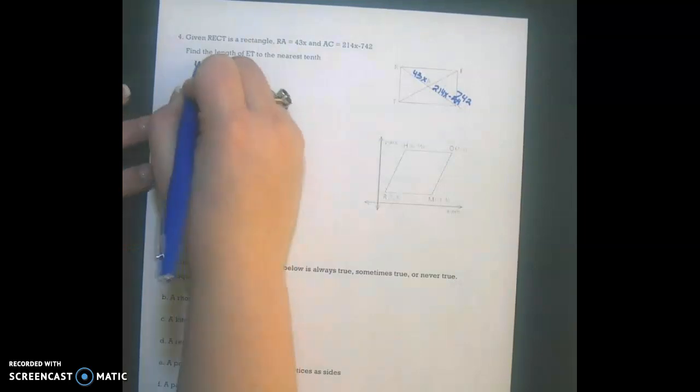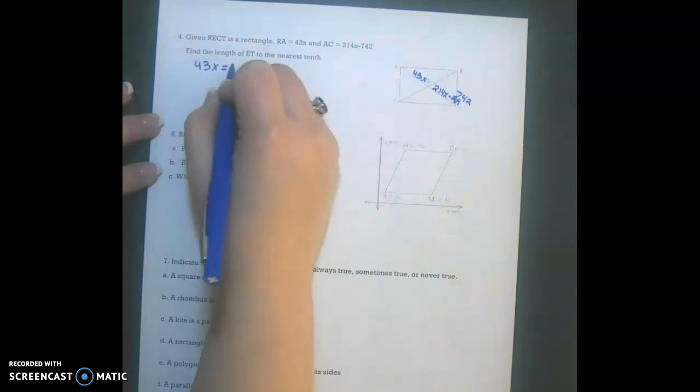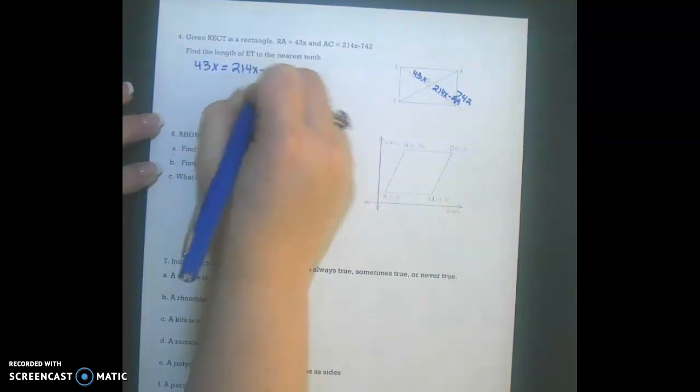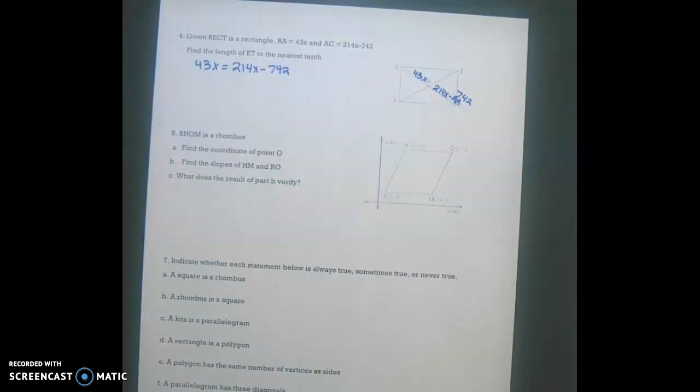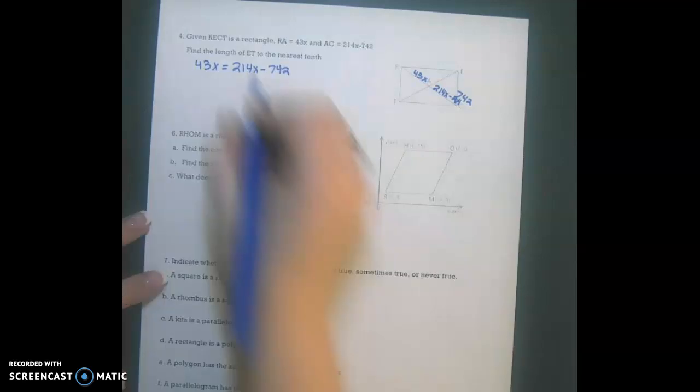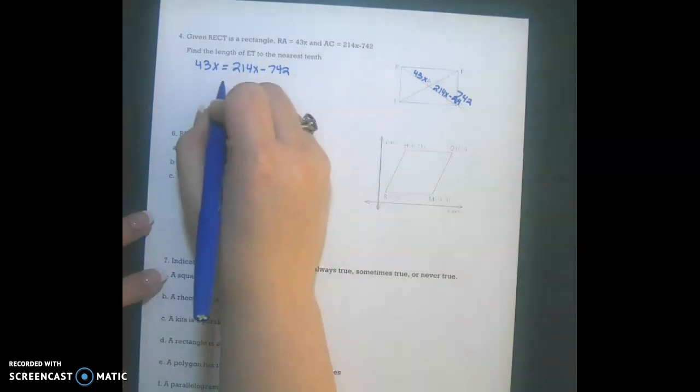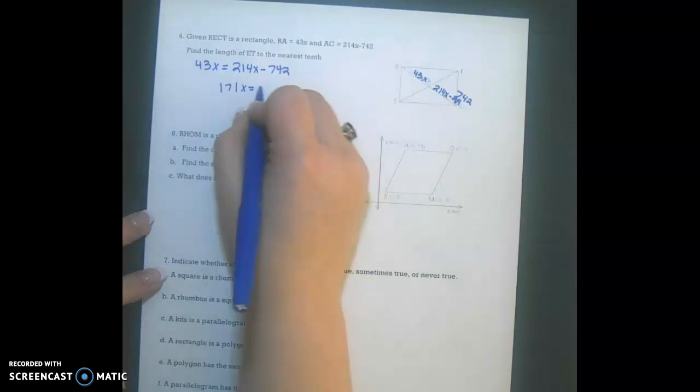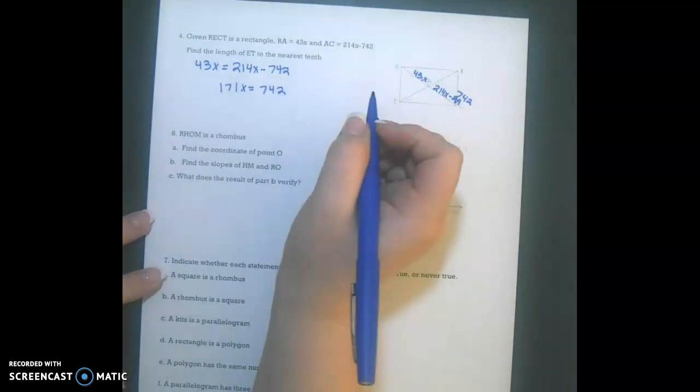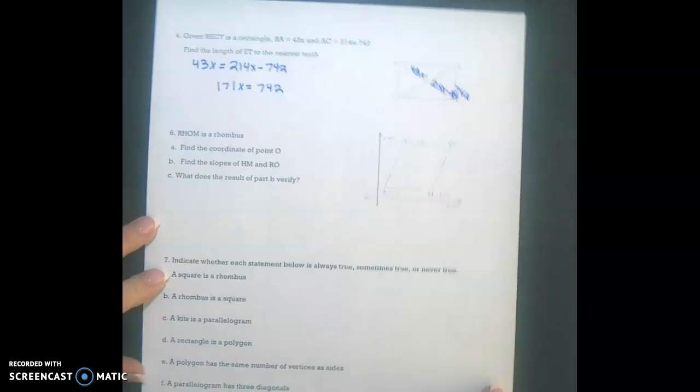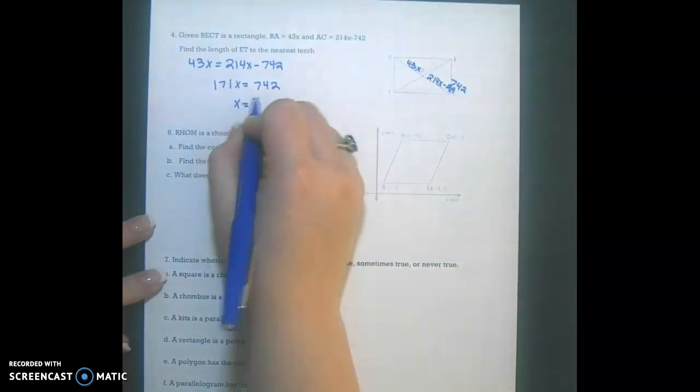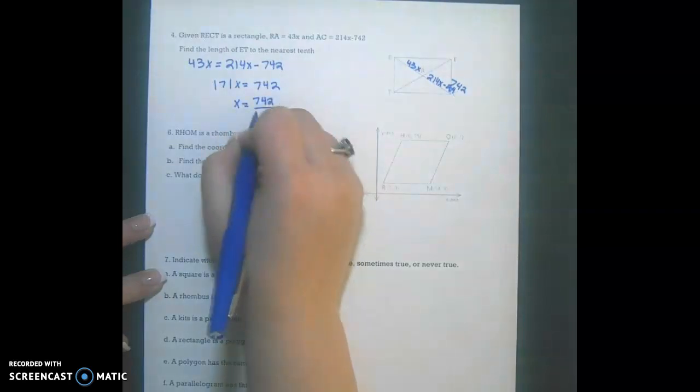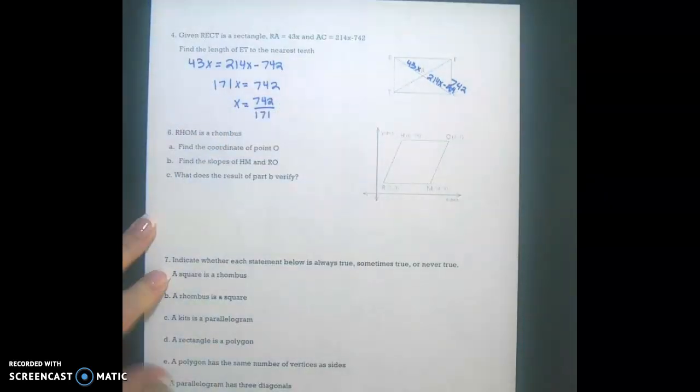So I can say that 43X is equal to 214X minus 742. And I can solve for X, and that would be 171X is equal to 742. And when I divide this, I'm not going to get a whole number. So I'm going to leave it as a fraction, because I want to wait until I round at the very end.